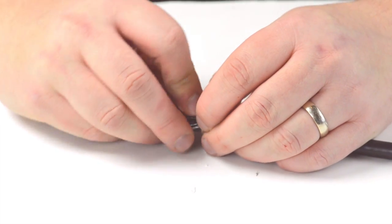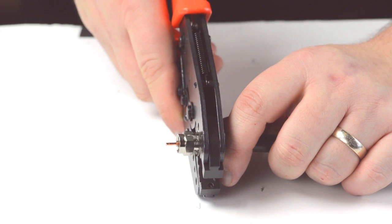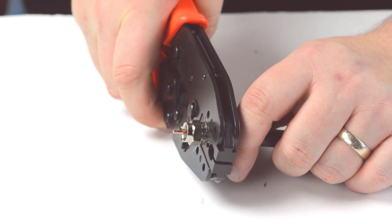Then slide up the ferrule to the base of the connector, folding the shield with it. Crimp the ferrule onto the outer jacket to complete termination.